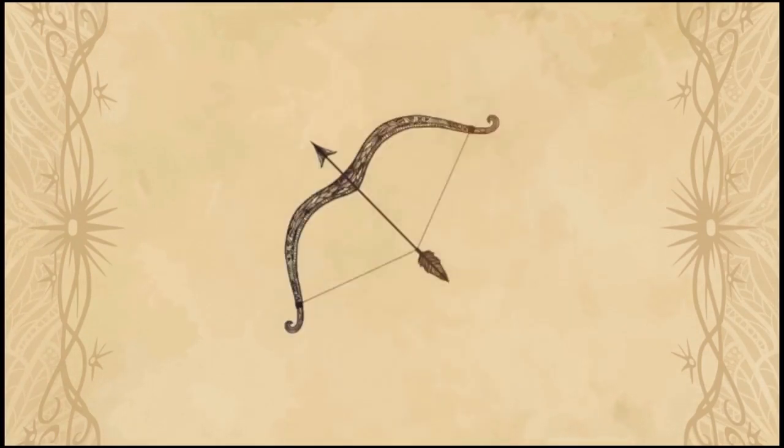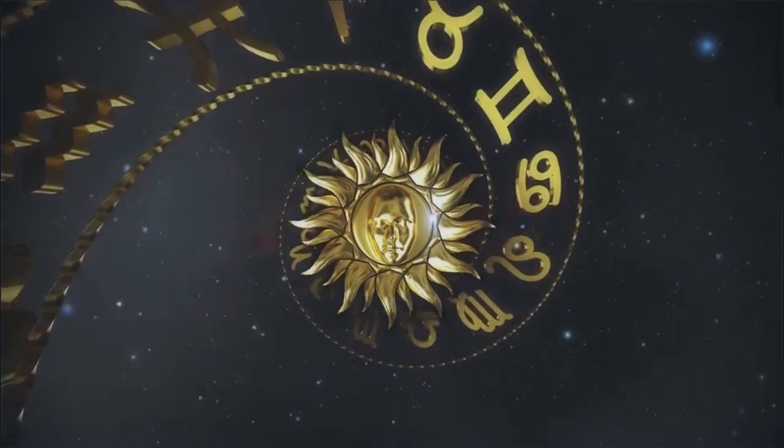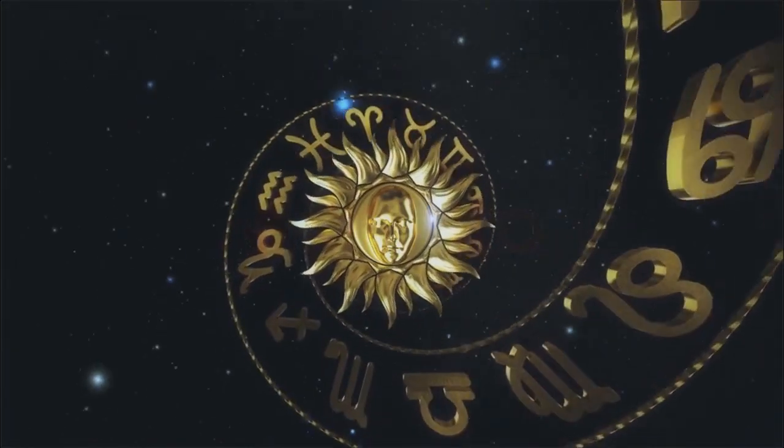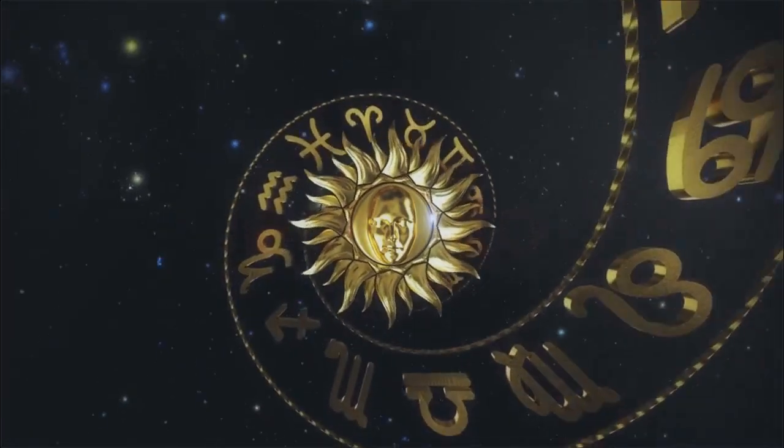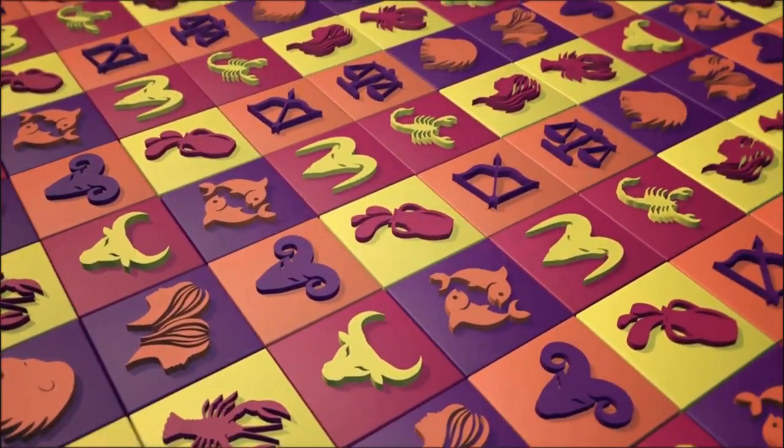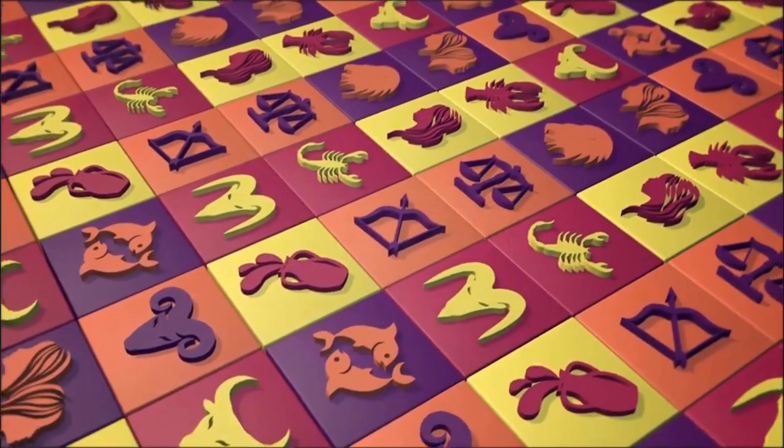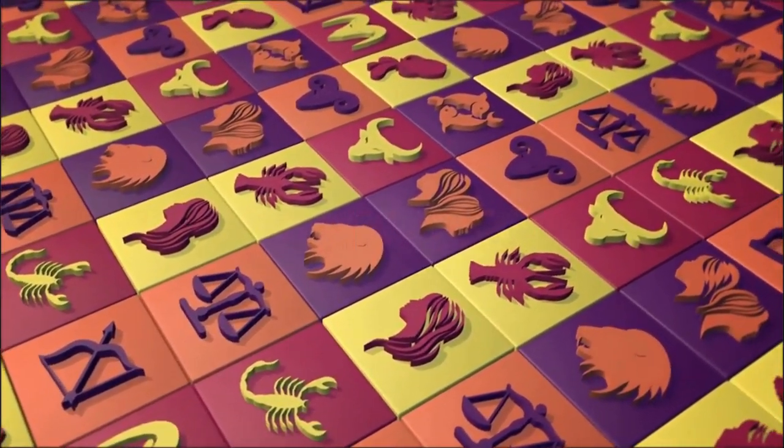The solar eclipse on October 14 at 22 degrees Libra determines the energy background for the next two weeks, which promise to be very difficult. The world is at a critical stage, but after it there is always a reset and a new stage in the development of the world order, says astrologer Marina Skadi.